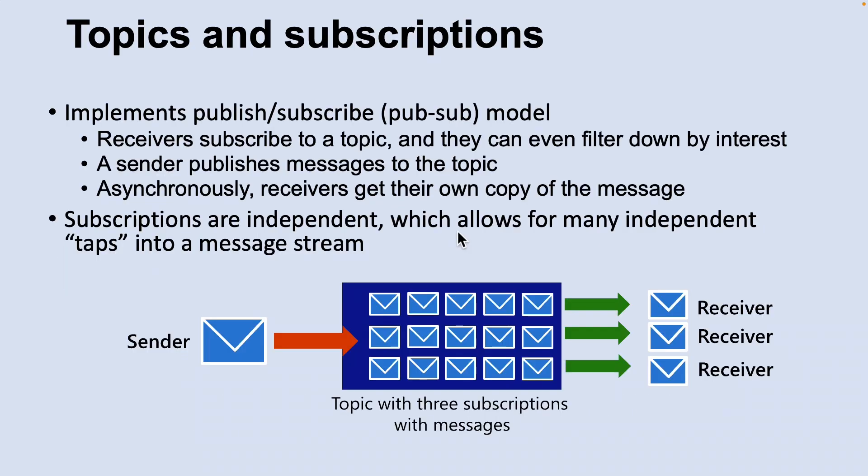In contrast to queues, in which each message is processed by a single consumer, topics and subscriptions provide a one-to-many form of communication. Messages are sent to a topic and delivered to one or more associated subscriptions depending on filter rules that can be set on a per-subscription basis. Subscriptions can use additional filters to restrict the messages that they want to receive.